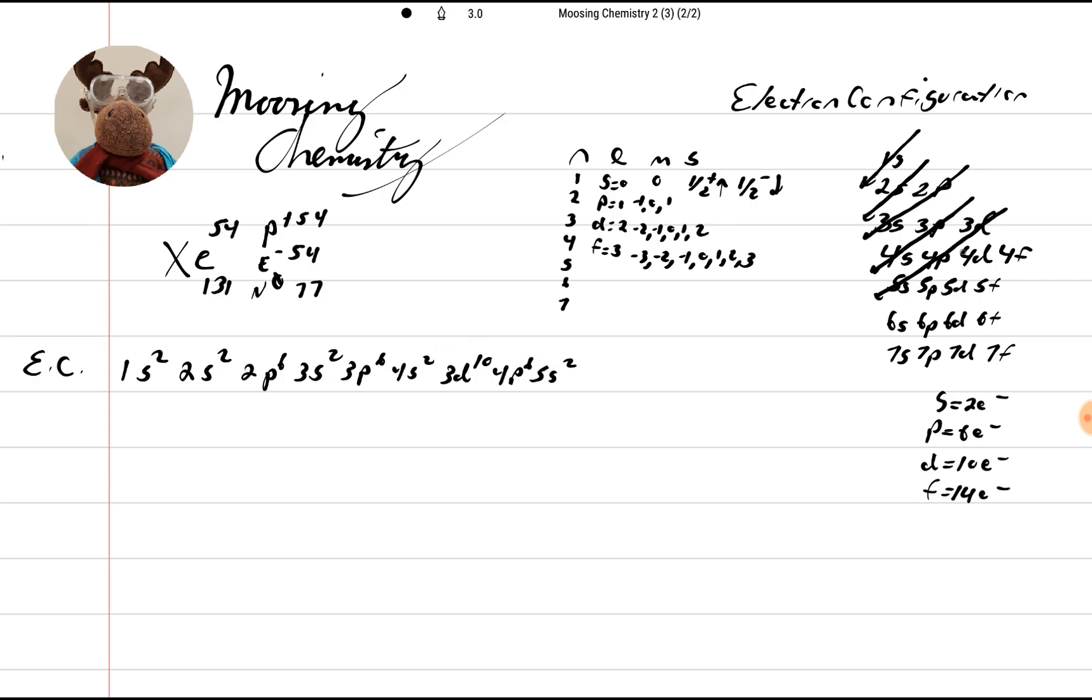We're at 38. So we're going to do 4D10 next, and 5P, I think. So 4D10 would give us 48, and 48 plus 6 is 54. So it would be 5P6.